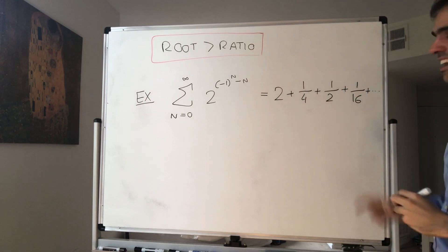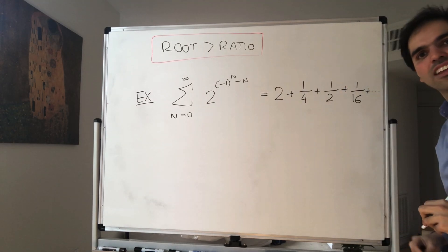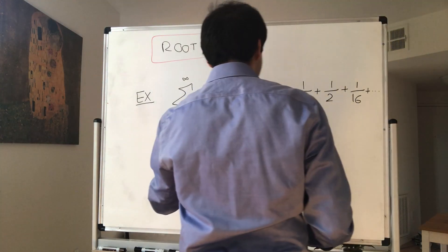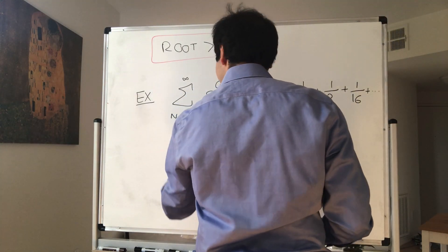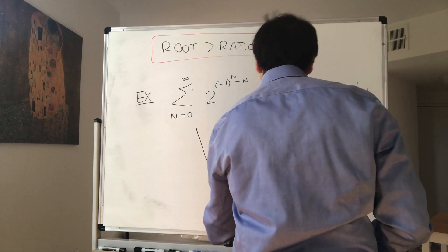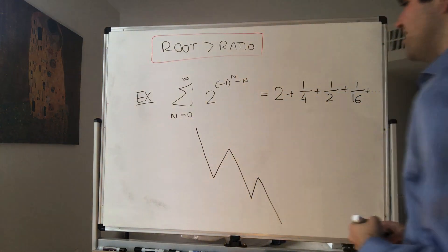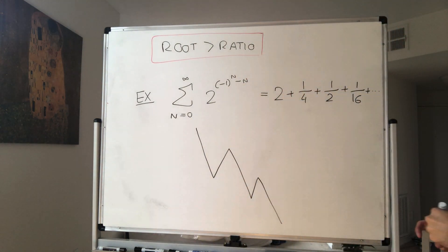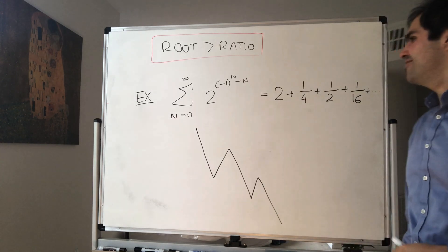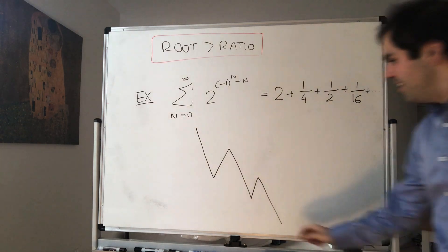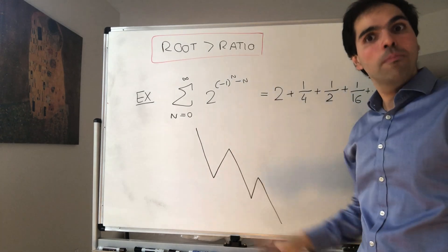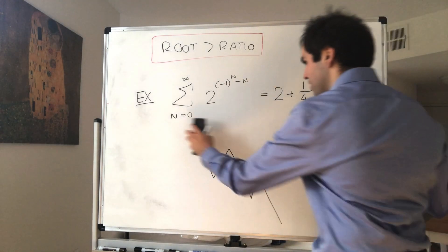Here's why I call it the stock market series — because it looks like the stock market: 2, 1/4, 1/2, 1/16, 1/8, etc. It's very non-monotone, if you'd like. Now let's see what happens if we apply the ratio test to this.